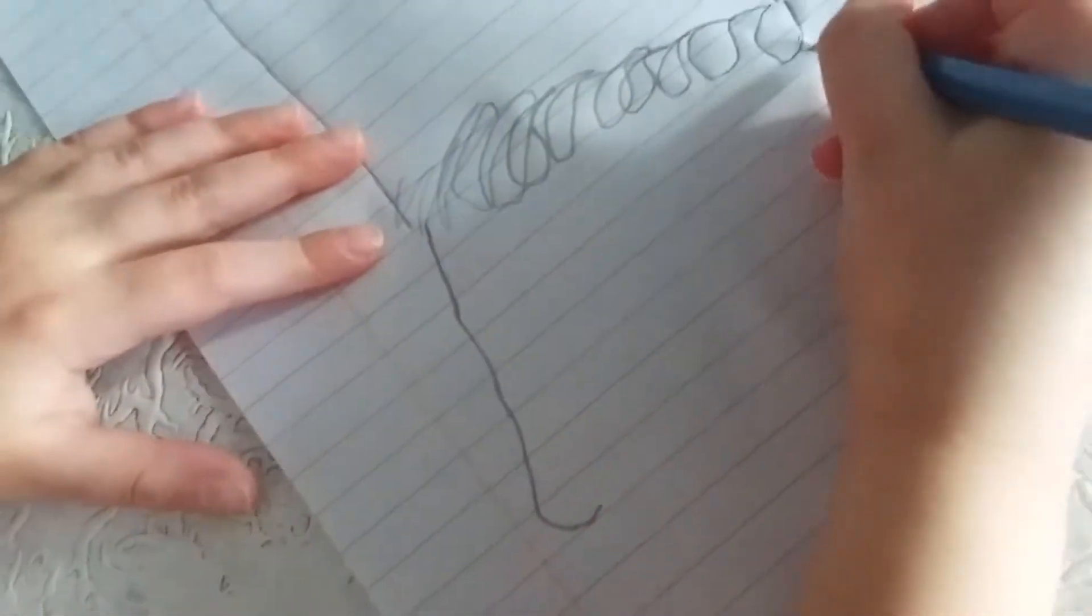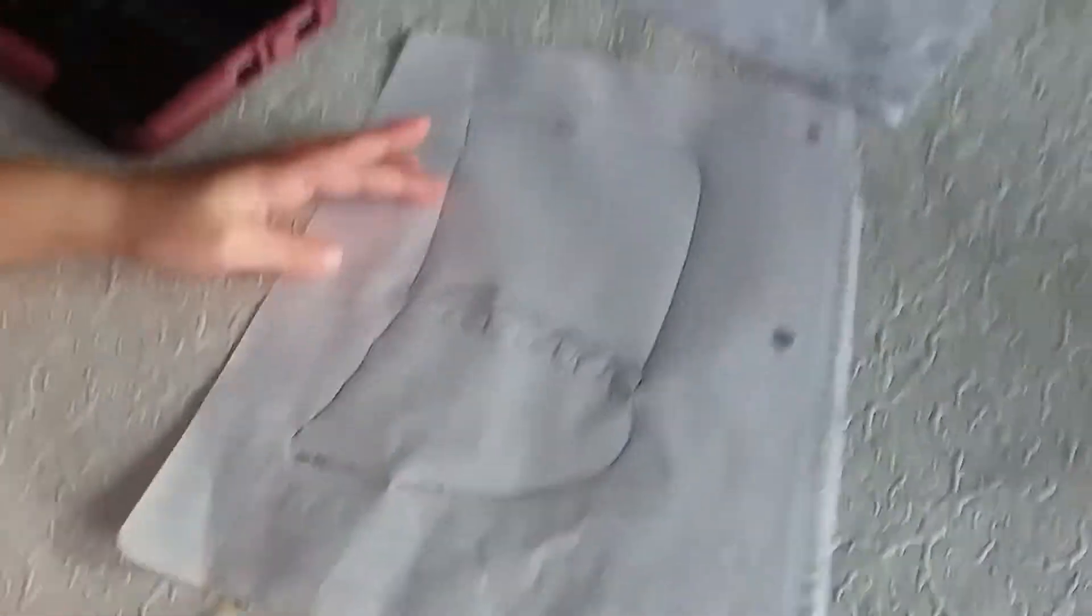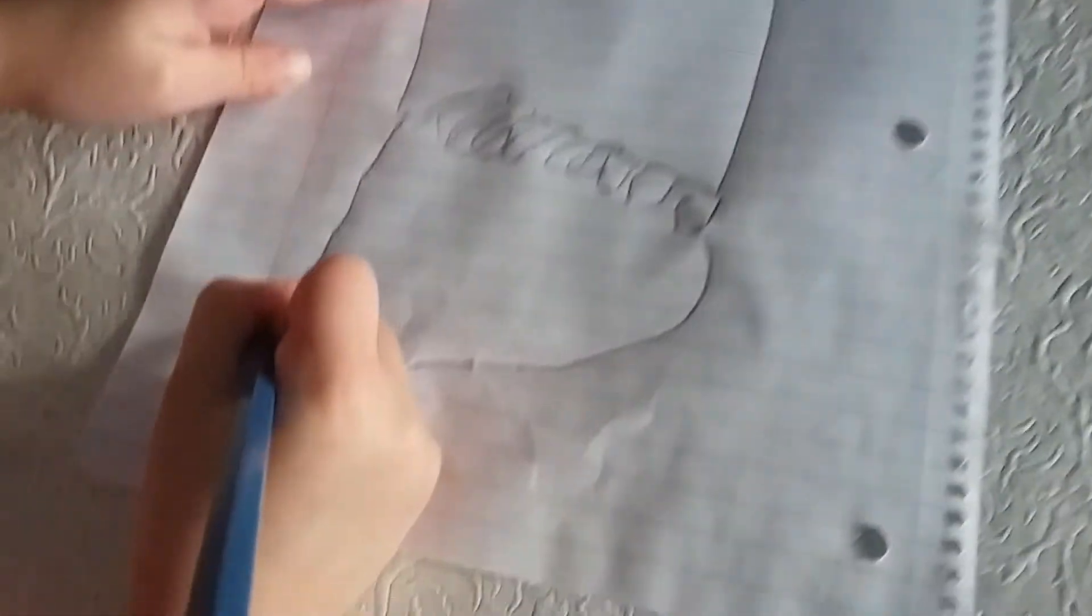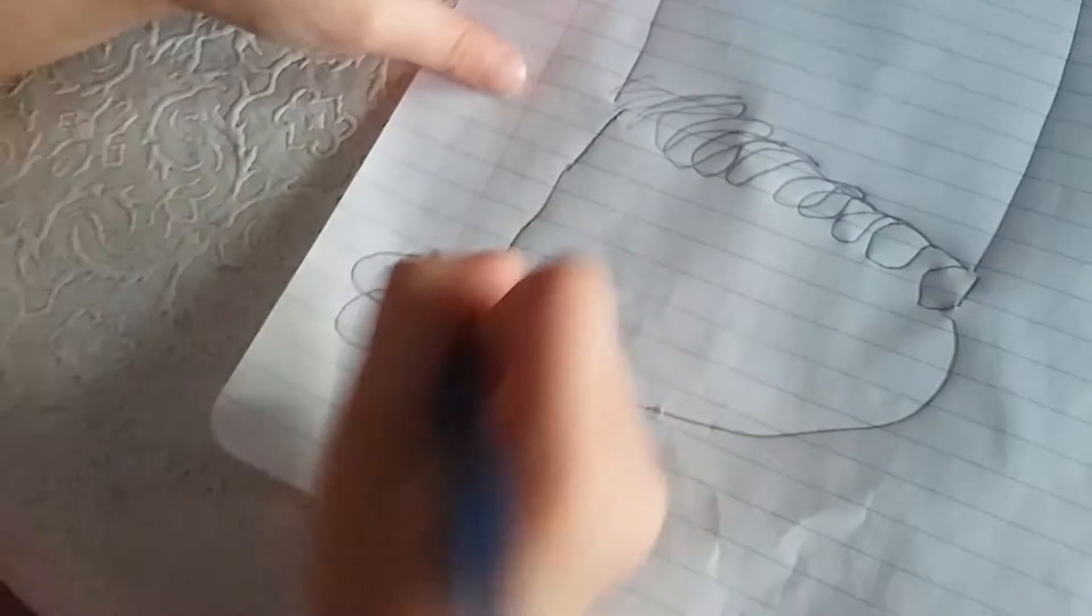And then you want to draw this, you want to draw this and then you want to connect it. And that's the first part of the mercat. And you want to make a big line like this and then connect it like that.